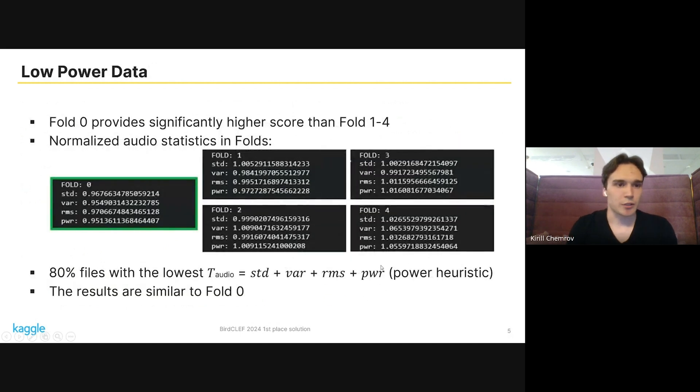Let me describe the idea of low-power data. It was really surprising for us that fold zero provides significantly higher score than other folds and we wanted to find out the reason. We tried to calculate different statistics and what we found out is that some statistics related to power, like standard deviation, variation, root mean square, or power itself, for fold zero has a low value.